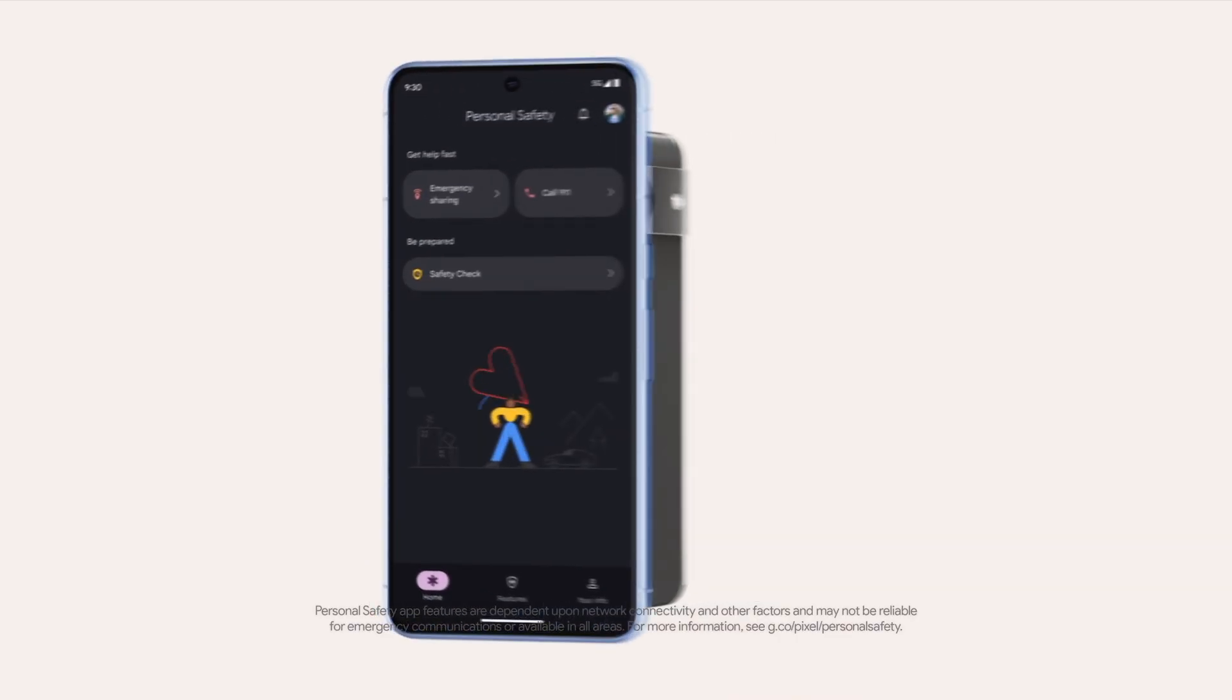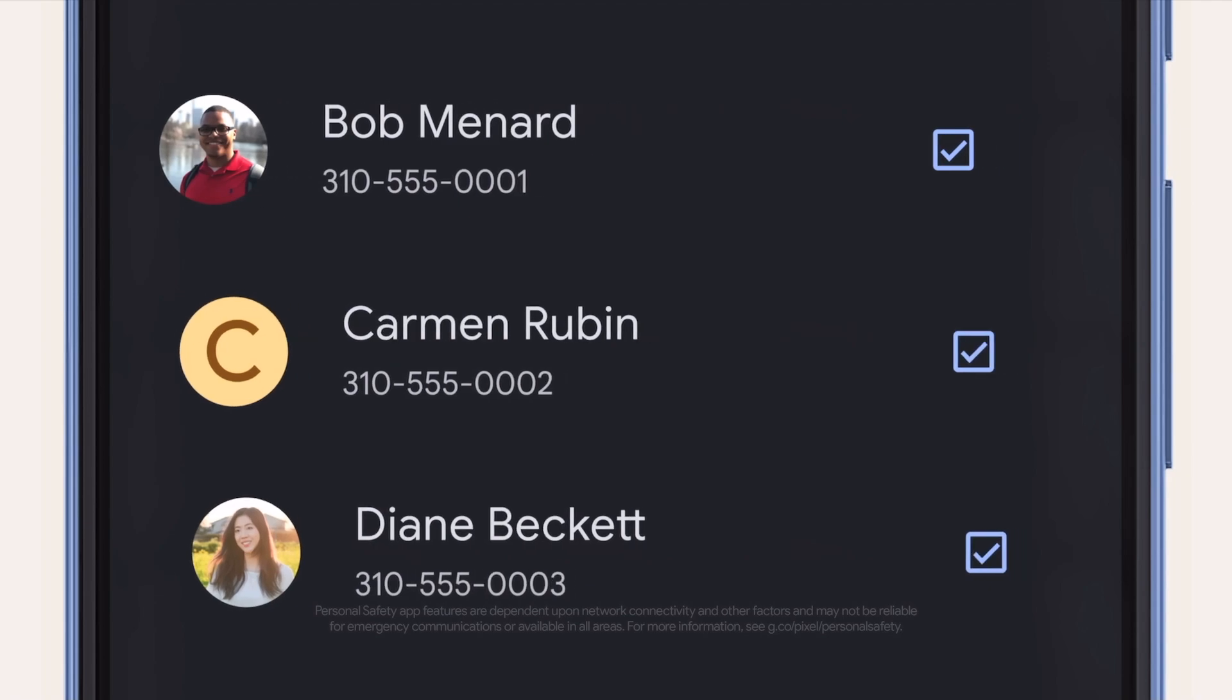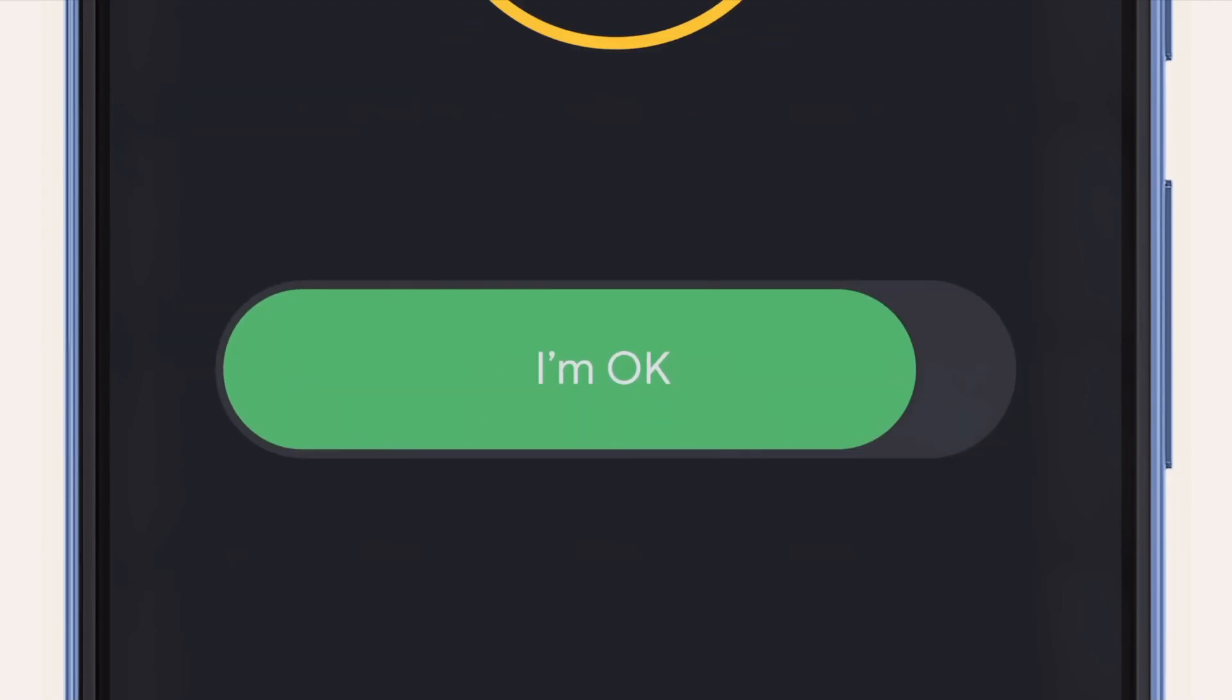And Safety Check has your back. Turn it on. Then we'll text emergency contacts if you can't tap in. And, cool, you're home.